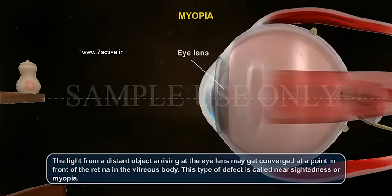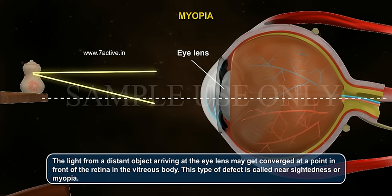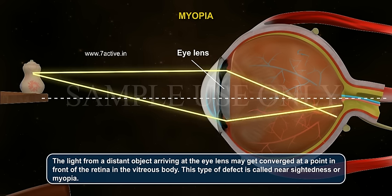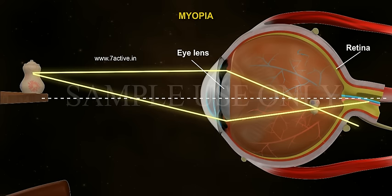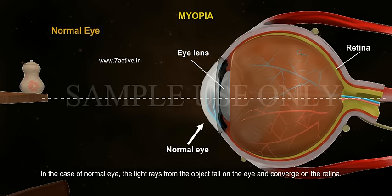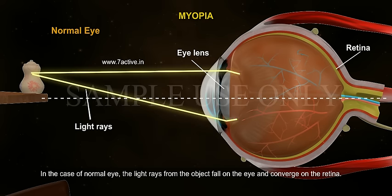Myopia: The light from a distant object arriving at the eye lens may get converged at a point in front of the retina in the vitreous body. This type of defect is called Nearsightedness or Myopia. In the case of a normal eye, the light rays from the object fall on the eye and converge on the retina.